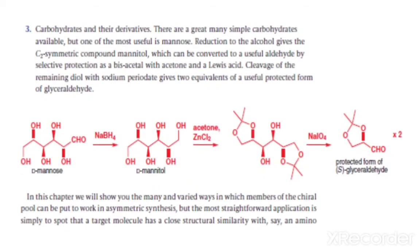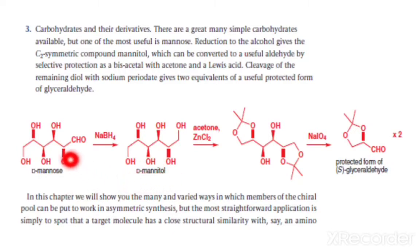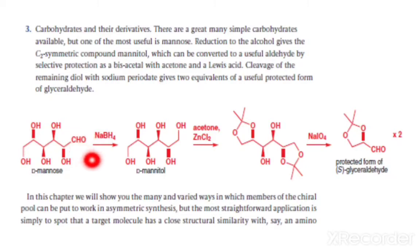Number three: carbohydrates and their derivatives. There are a great many simple carbohydrates available, but one of the most useful is D-mannose. In D-mannose, reduction to the alcohol gives D-mannitol — conversion of D-mannose to D-mannitol by using sodium borohydride (NaBH4). The aldehyde of the sugar is reduced to give the alcohol. This product is a C2-symmetric compound called D-mannitol.